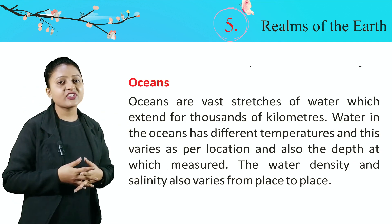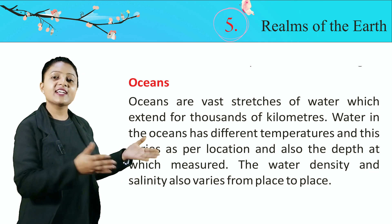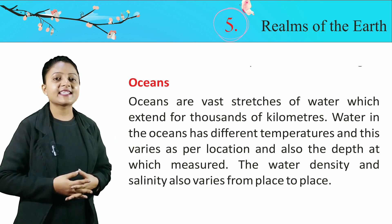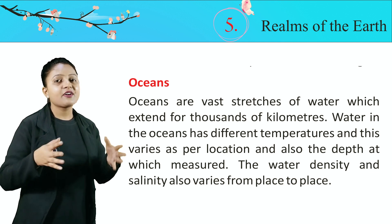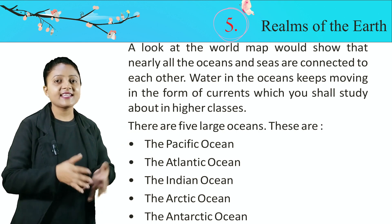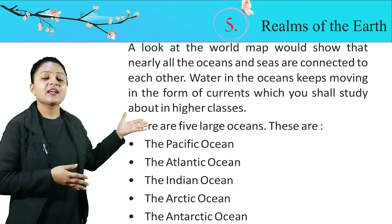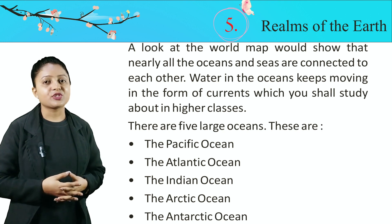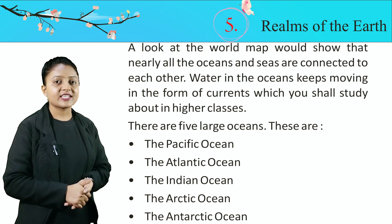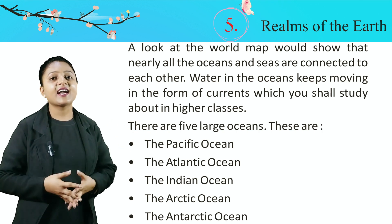Oceans. Oceans are vast stretches of water which extend for thousands of kilometers. Water in the ocean has different temperatures, and this varies as per location and also the depth at which it is measured. The water density and salinity also varies from place to place. A look at the world map would show that nearly all the oceans and seas are connected to each other. Water in the oceans keeps moving in the form of currents, which you shall study about in higher classes. There are 5 large oceans: the Pacific Ocean, the Atlantic Ocean, the Indian Ocean, the Arctic Ocean, and the Antarctic Ocean.